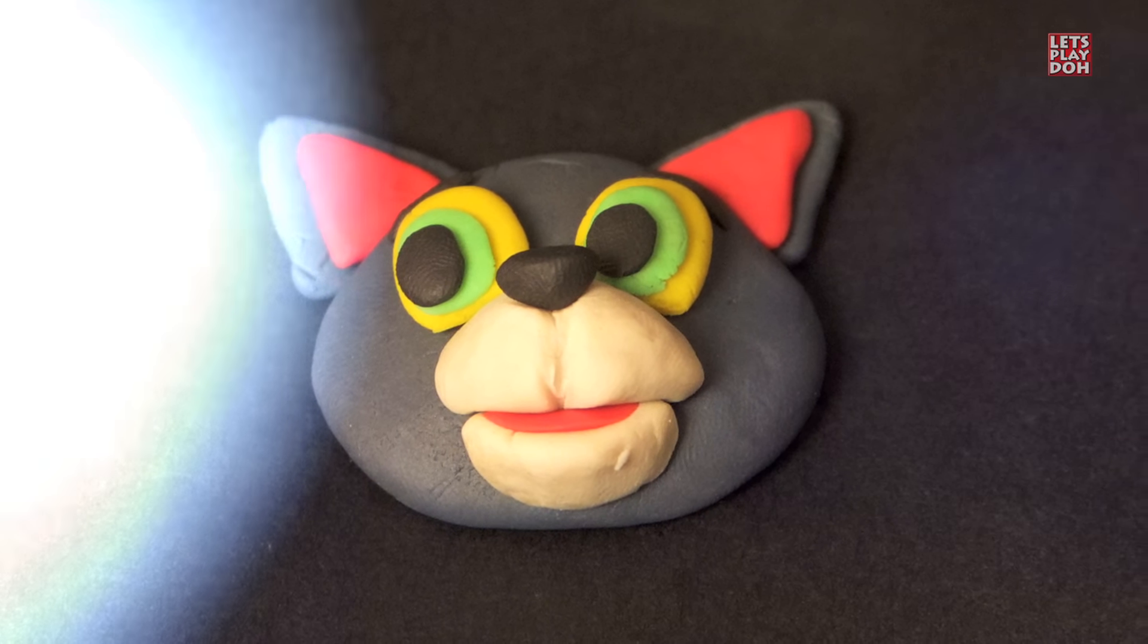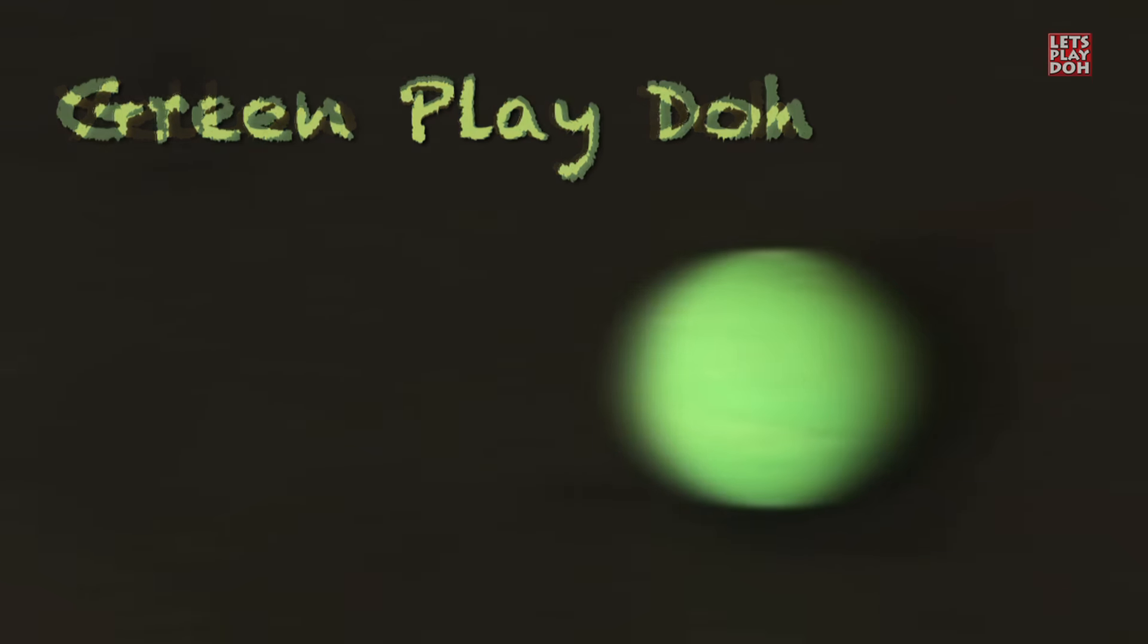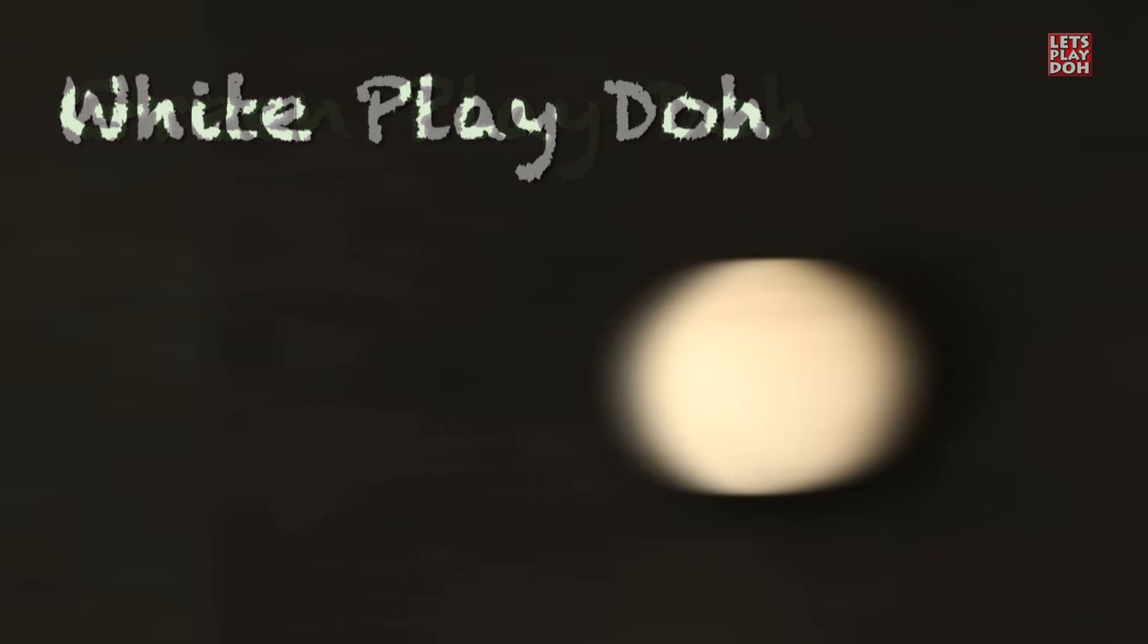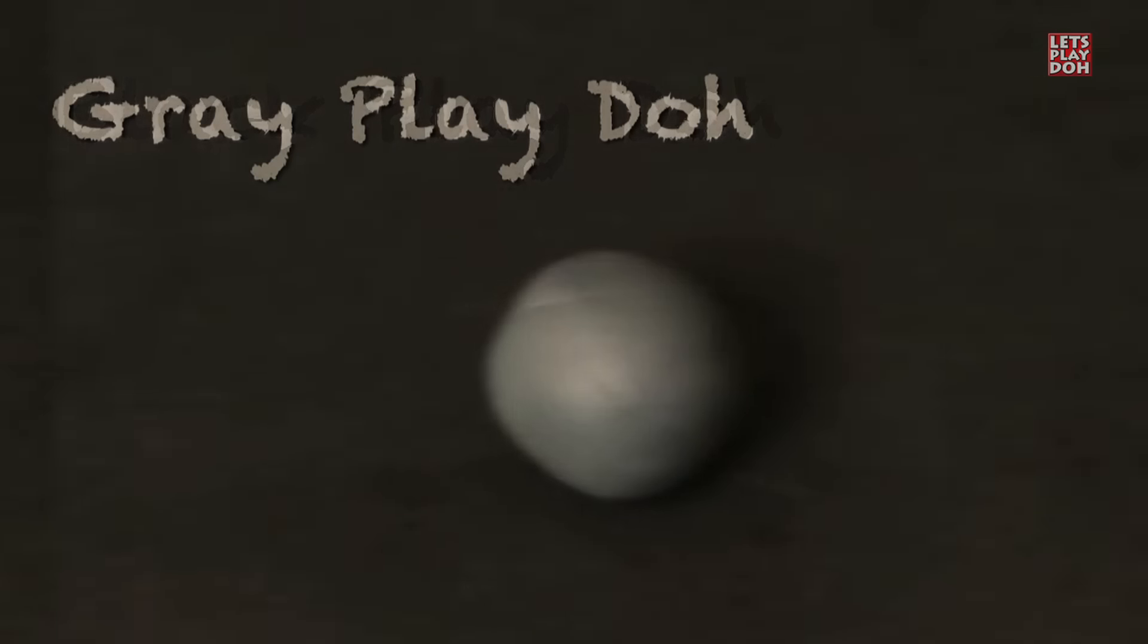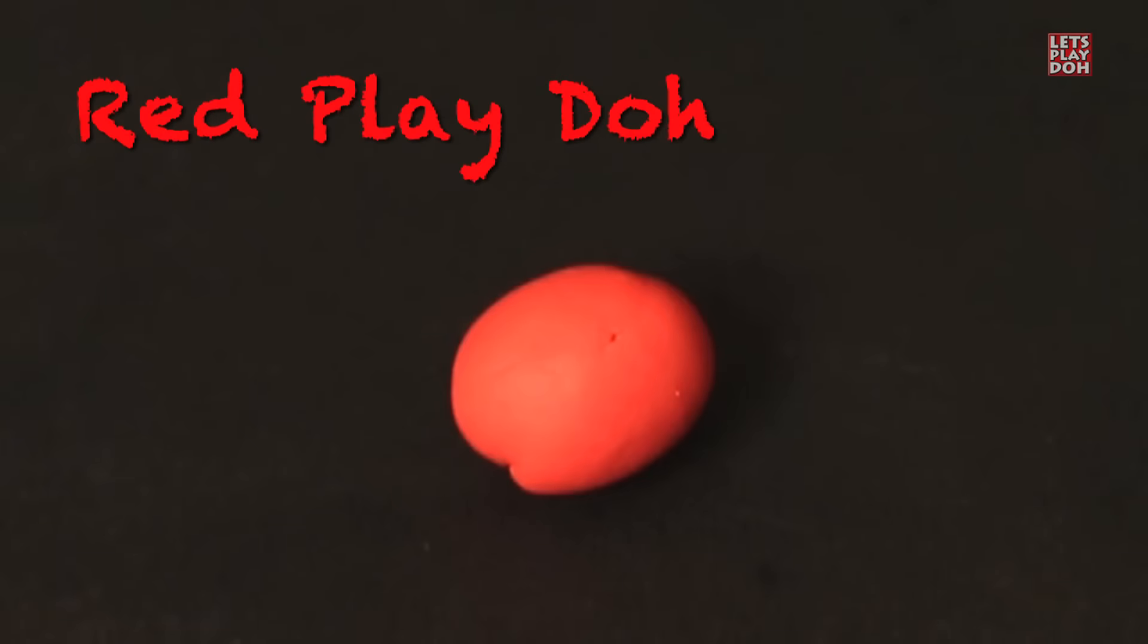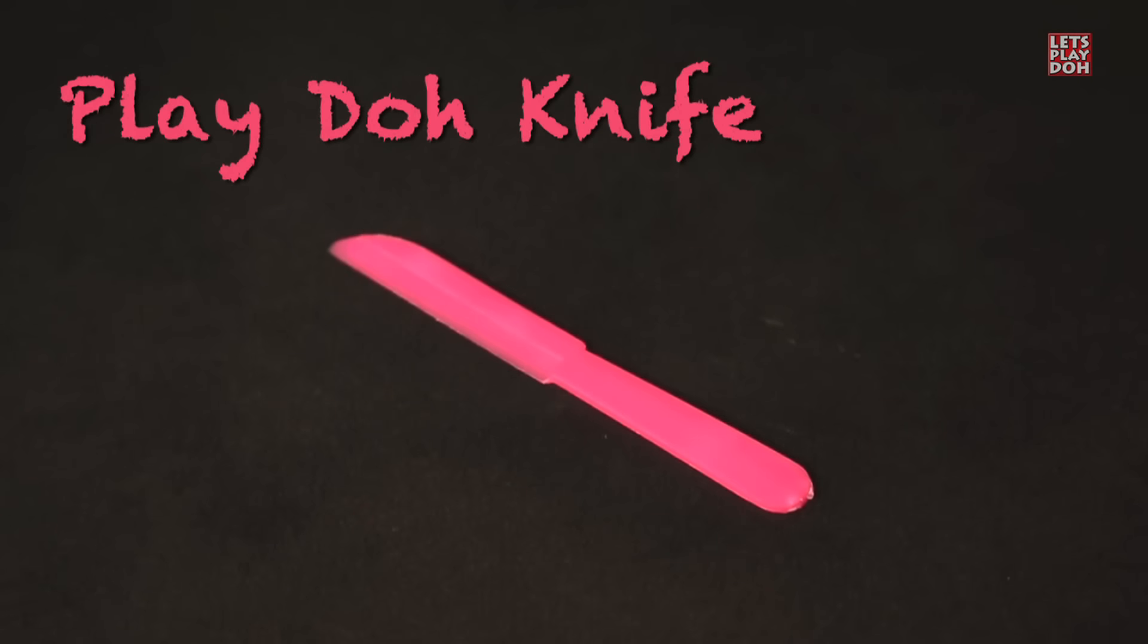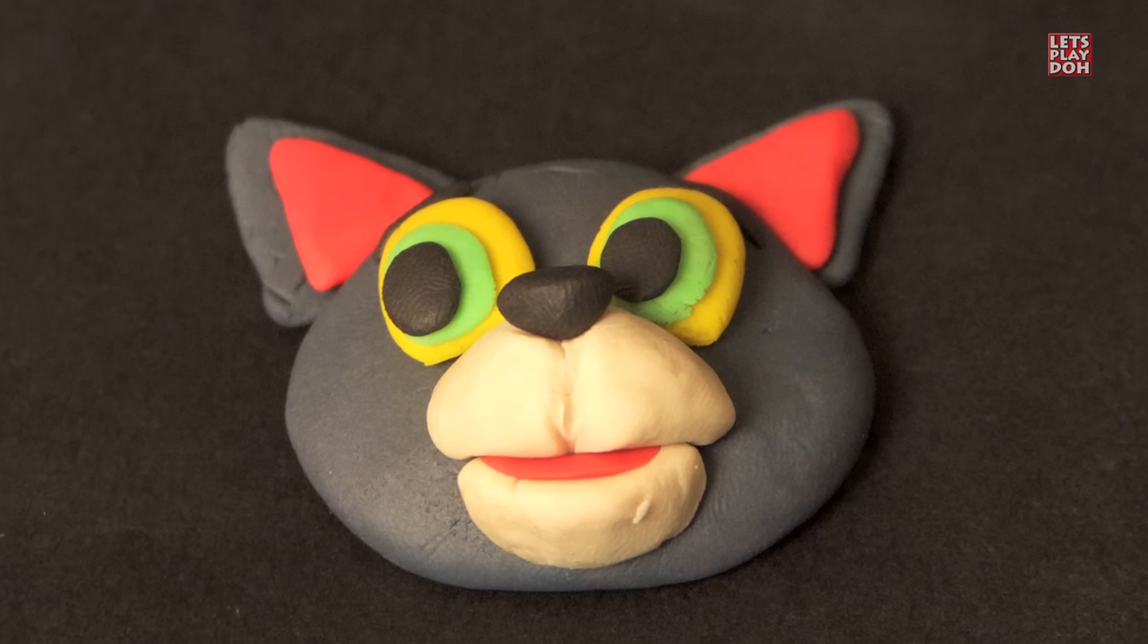All we're gonna need is some yellow Play-Doh, some green Play-Doh, some white Play-Doh, some black Play-Doh, some gray Play-Doh, some red Play-Doh, and a Play-Doh knife. That's it. All right, so let's get started.